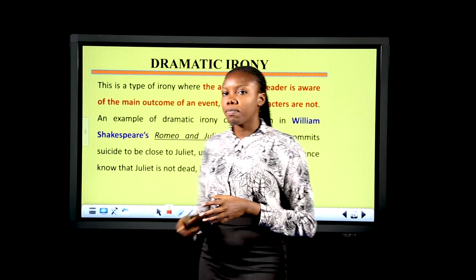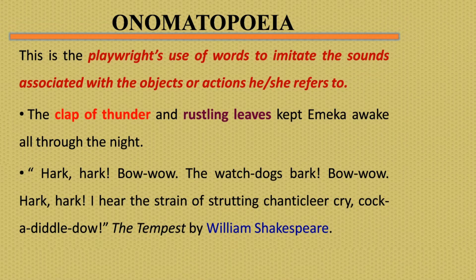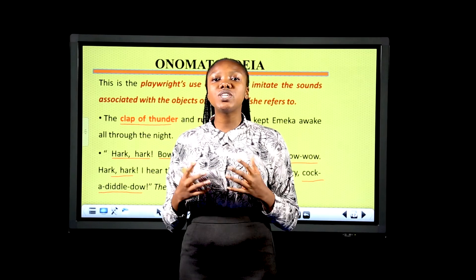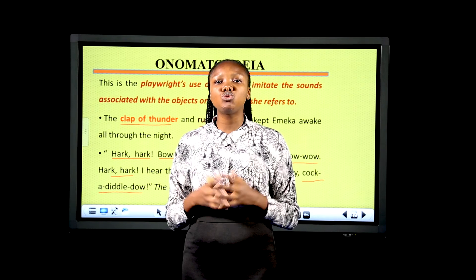Onomatopoeia is the use of words to imitate sounds associated with objects or actions they refer to. For example: 'The clap of thunder and the rustling leaves kept Emeka awake all through the night.' Another example: 'Hark, hark! Bow-wow, the watch-dog's bark. Bow-wow. Hark, hark! I hear the strain of strutting Chanticleer cry, cock-a-doodle-doo.' From these examples, we see that the playwright makes use of words to imitate sounds.